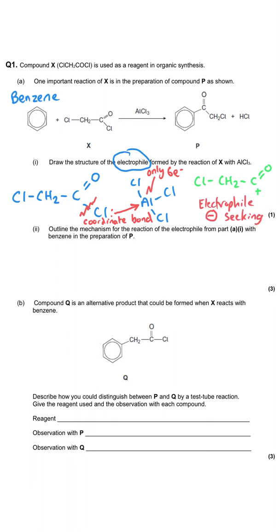We're asked to outline the mechanism for the reaction of the electrophile from part A1 with benzene in the preparation of P. The electrophile we've just drawn is going to be attracted to the electron rich benzene ring. So we draw the curly arrow. Whenever we're doing electrophilic substitution mechanisms, which is what this type of mechanism is, it's a shame sometimes they give you credit for actually stating the name of the mechanism but not here. Even though we talk about the electrophile attacking the benzene ring, the rule of mechanisms is we're showing the movement of electrons, so the curly arrow has to start at that pi cloud which is symbolized by the circle and it points out to where the positive charge is on the electrophile.